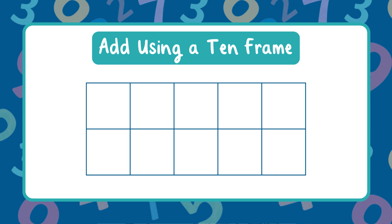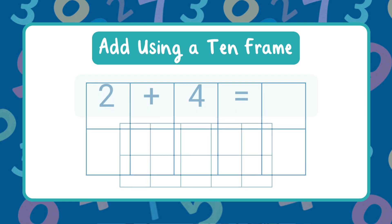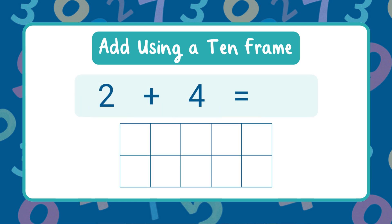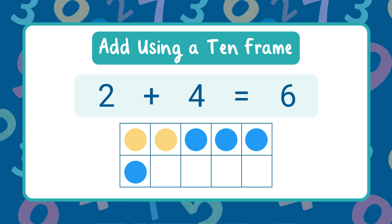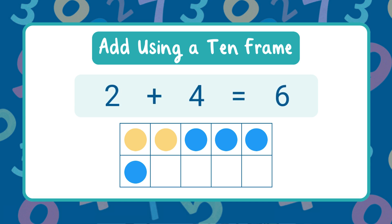Let's solve a problem together using a ten frame. Our number sentence is two plus four. Start by placing two counters in the ten frame, now add four more counters, and let's count them all together. The sum is six, so two plus four equals six.